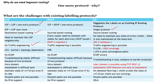LDP and RSVP are both not ECMP-aware, but segment routing is ECMP-aware. For both LDP and RSVP, troubleshooting is difficult because there are two protocols involved — we need to troubleshoot the IGP and then the LDP or RSVP protocol. But with segment routing, because it is a single protocol, troubleshooting becomes very easy.